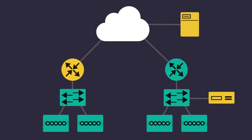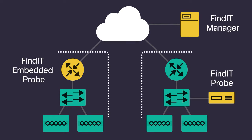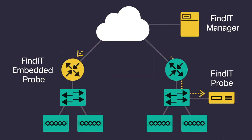How does it work? Cisco Findit Network Management is composed of two applications: the probe and the manager. The probe resides on the local network — one probe per site. The manager can reside anywhere as long as the probes can communicate with it. For networks with only a single site, the manager is optional.